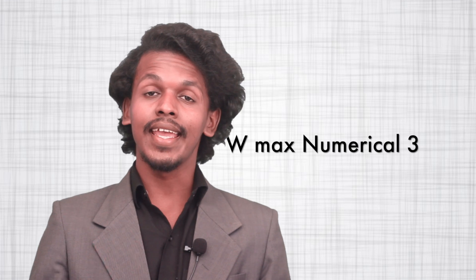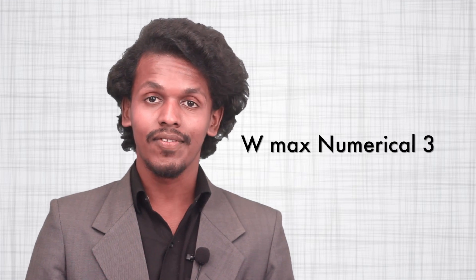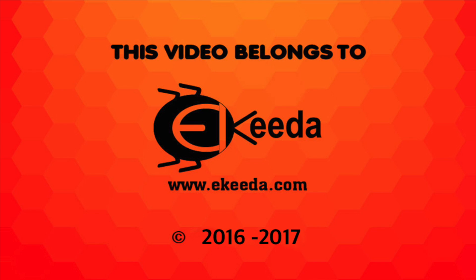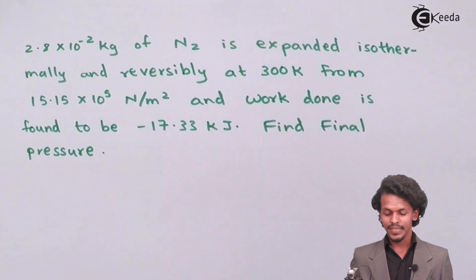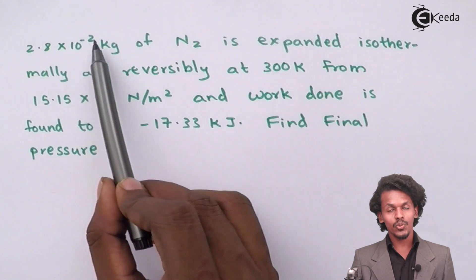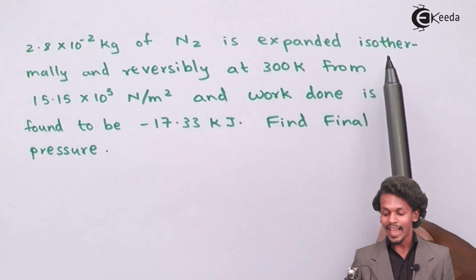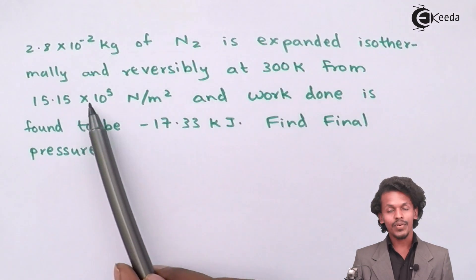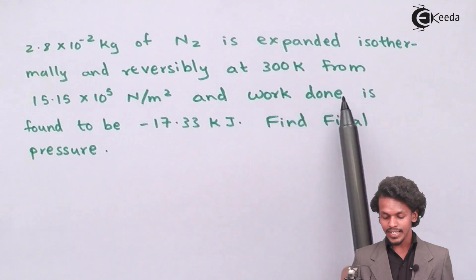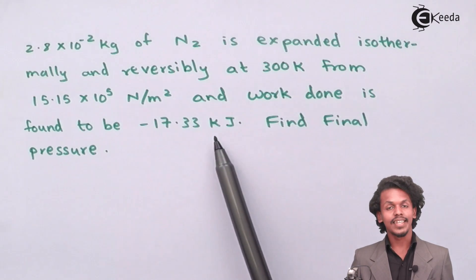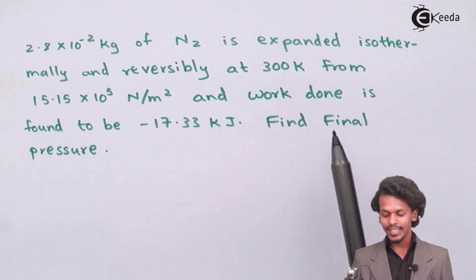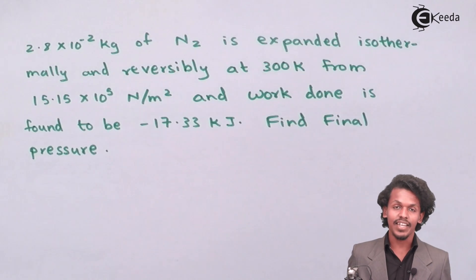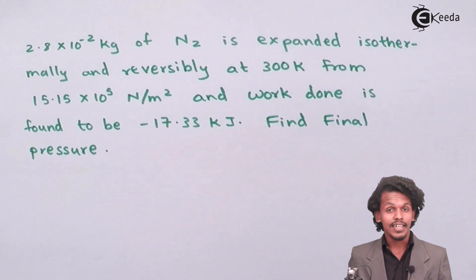Hey friends, now we are going to solve a new numerical which is based on W_max, that is maximum work. So let us see what the numerical is and what are the requirements. 2.8×10⁻² kg of nitrogen gas is expanded isothermally and reversibly at 300 Kelvin, from 15.15×10⁵ Newton per meter square, and work done is found to be minus 17.33 kilojoules. We have to find out the final pressure.